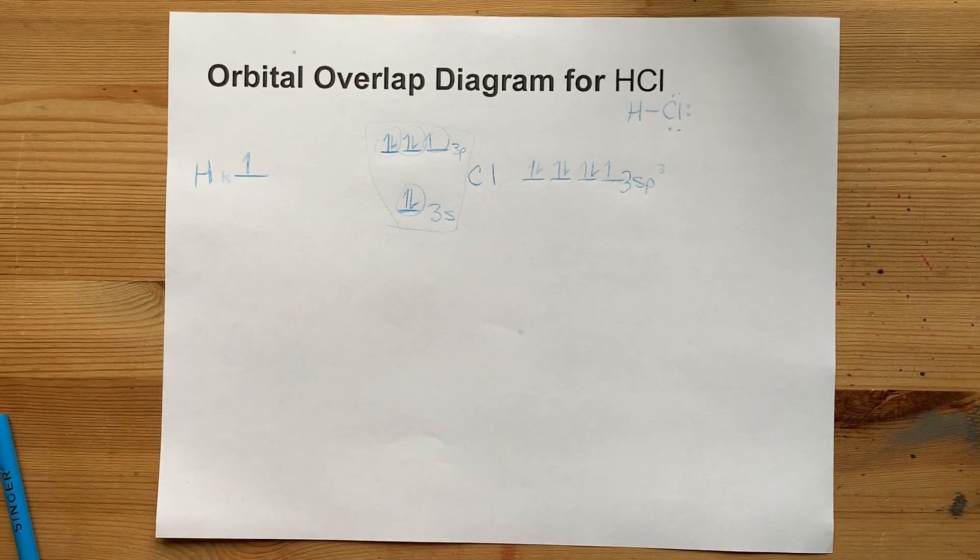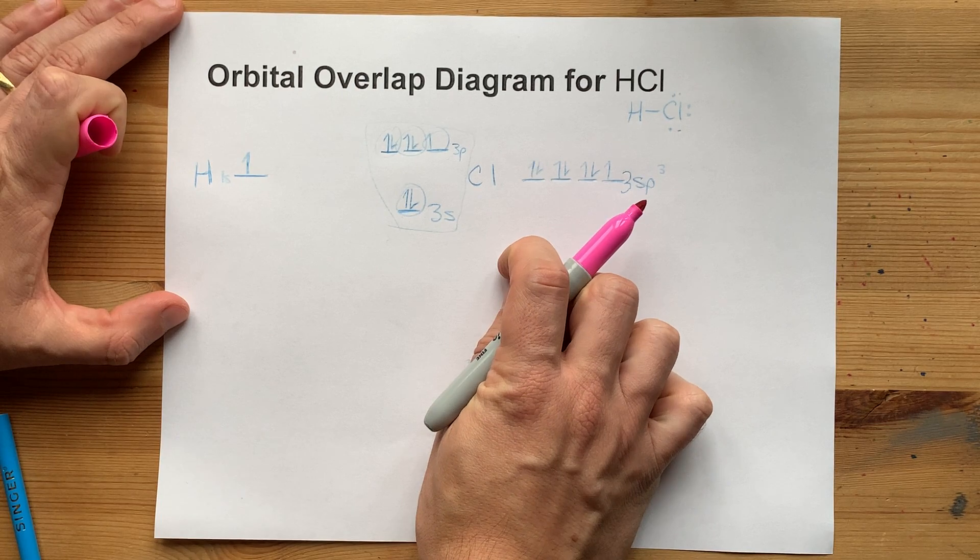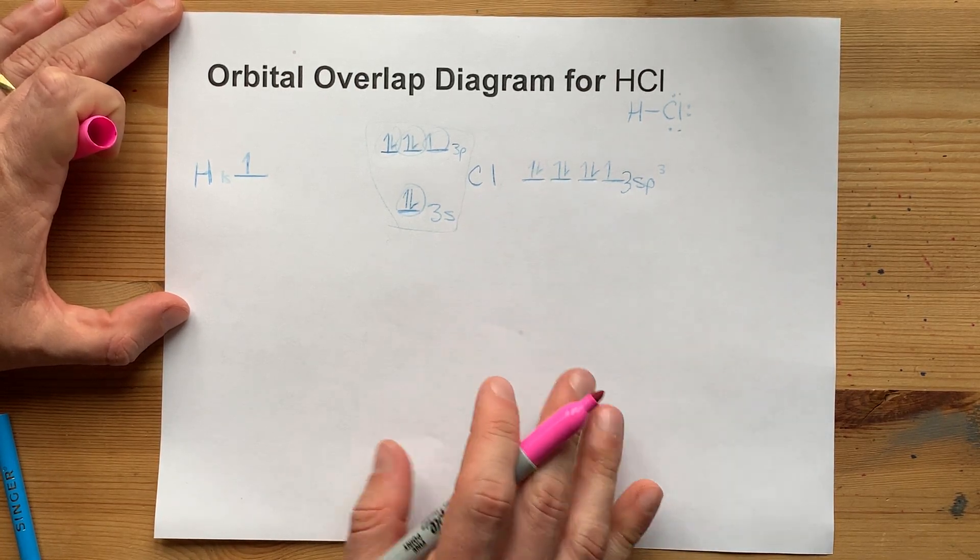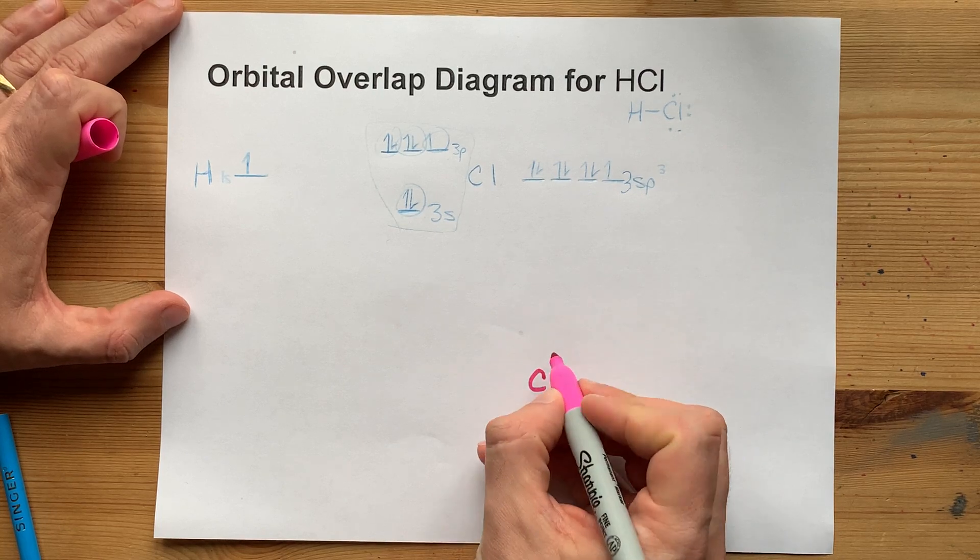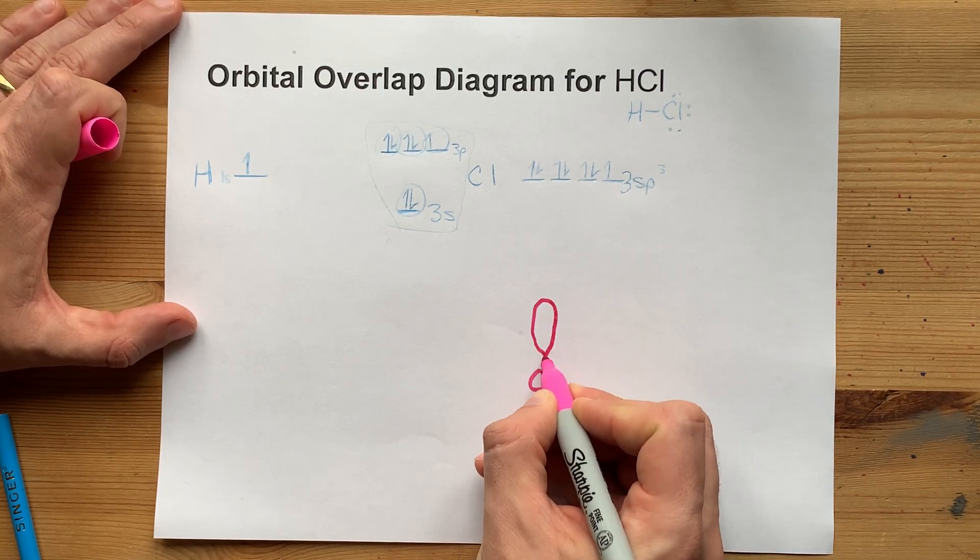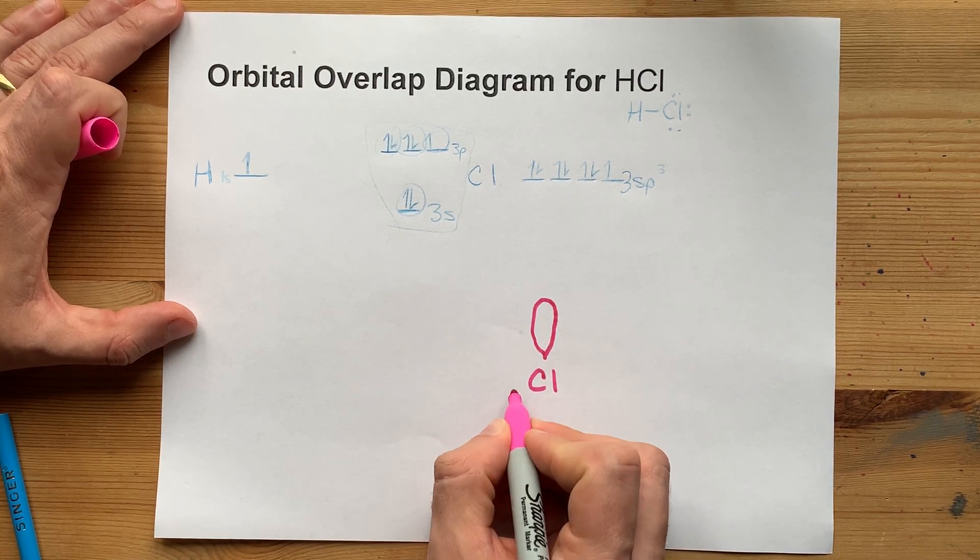To draw this, you're going to have to know what the shape of sp3 orbitals is. They arrange themselves tetrahedrally around a Cl. So, if you put a Cl here, you can draw one above it and then try to draw the other three downwards like a tripod.